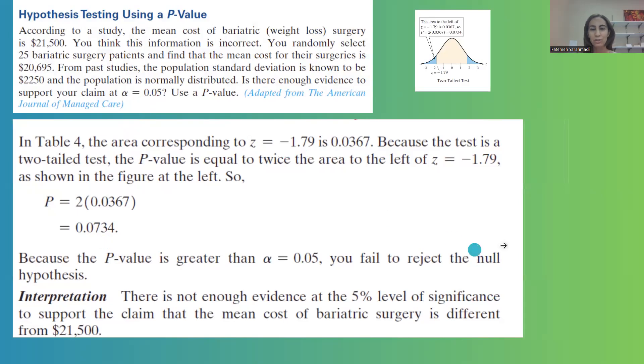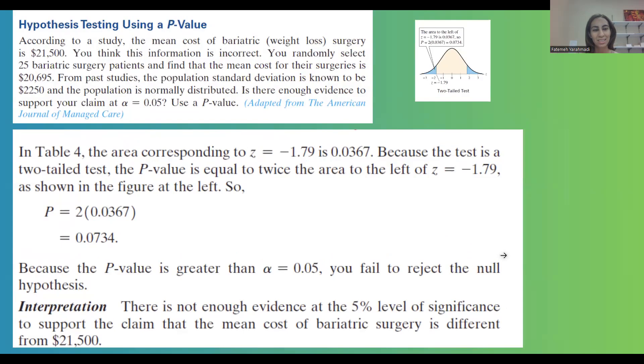When we say fail to reject the null hypothesis, it means that we support the null hypothesis. When you support the null hypothesis, it means that you reject the alternative hypothesis. Interpretation: There is not enough evidence at 5% level of significance to support the claim that the mean or average cost of bariatric surgery is different from $21,500.